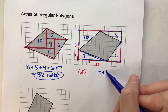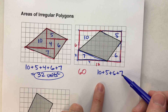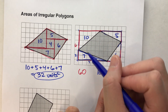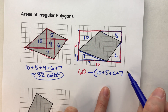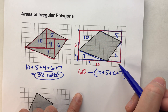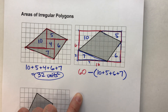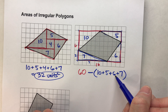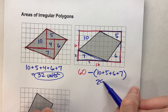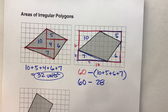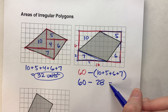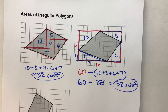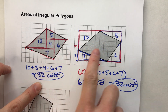Those are the pieces I don't want — 10 plus 5 plus 6 plus 7. We found the area of the big rectangle and the areas of the pieces we don't want, so we subtract: 10 plus 5 is 15, plus 6 is 21, plus 7 is 28. So this is 60 minus 28. And 60 minus 28 is 32 square units. And notice I get the same answer no matter which method I choose.